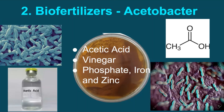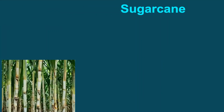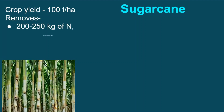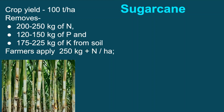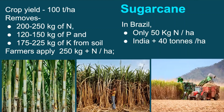Let us have some interesting details about sugarcane cultivation. As per an estimate, a sugarcane crop yielding 100 tons per hectare would remove 200–250 kg nitrogen, 120–150 kg phosphate, and 175–225 kg of potassium per hectare from soil. Therefore, in most countries including India, farmers apply a minimum of 250 kg nitrogen, that is about 550 kg of urea per hectare, plus other fertilizers. Interestingly, Brazilian farmers use only about 50 kg of nitrogen per hectare, yet deficiencies are negligible and they produce about 40 tons more cane per hectare than India, due to successful soil management and biological processes.